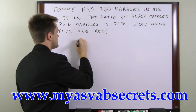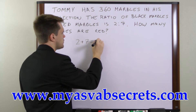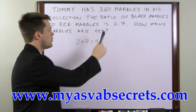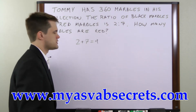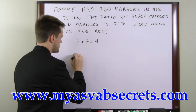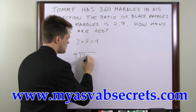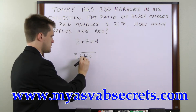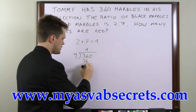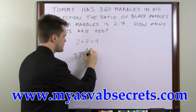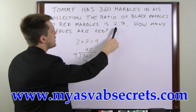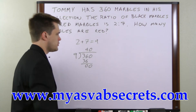We're going to add 2 and 7. 2 plus 7 equals 9. And then we're going to divide the whole, 360, by the sum of the ratios. So we'll divide 360 by 9. 9 goes into 36 four times, and that takes care of the 36, so we just have to add a zero. So 9 goes into 360 40 times. So each one in this ratio represents 40 marbles.